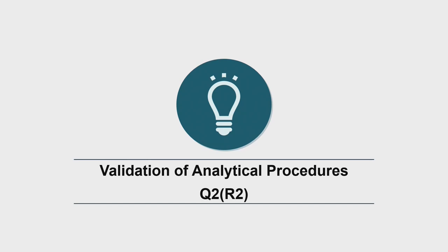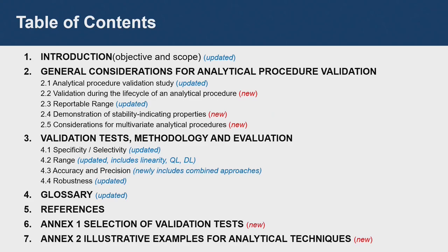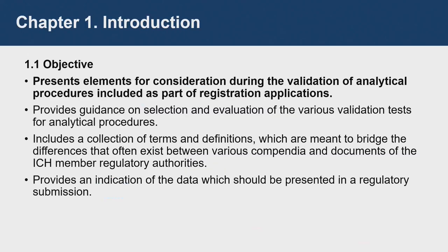I thought it would be better to cover Q2 first because it is something we are more familiar with. These are what are updated in Q2 as well as newly added: validation during the life cycle of an analytical procedure, the demonstration of stability indicator properties, new glossary, consideration of multivariate analytical procedures, and annexes that have been newly added.